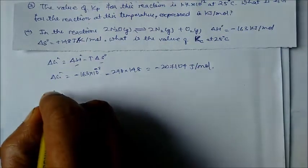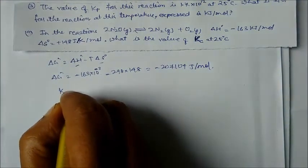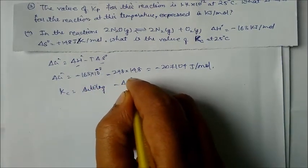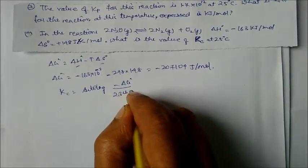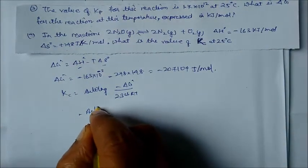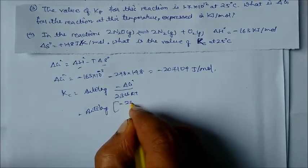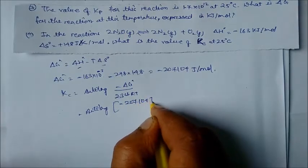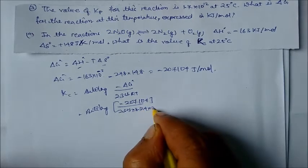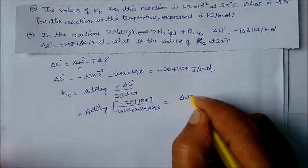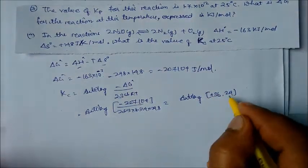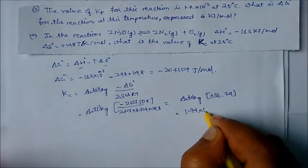To find the equilibrium constant Kc, we use log Kc = −ΔG° / (2.303 RT) = −(−207104) / (2.303 × 8.314 × 298), giving log Kc = +36.29. Taking antilog gives Kc = 1.94 × 10³⁶.